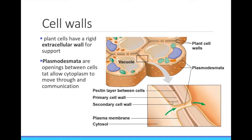Outside of the plasma membrane, plant cells have a cell wall. These are made of cellulose, a polysaccharide that is used for structural support. This is one of the characteristics that distinguishes plants from animals — animal cells do not have a cell wall. Some plant cells even lay down a secondary cell wall; we call that tissue wood.